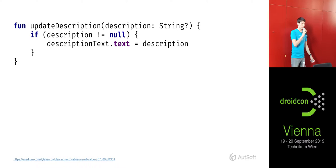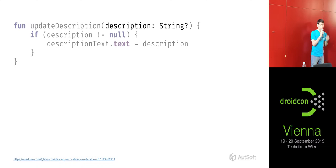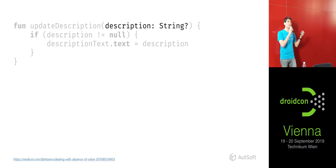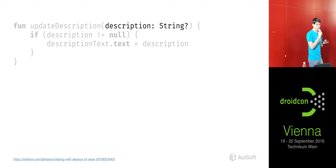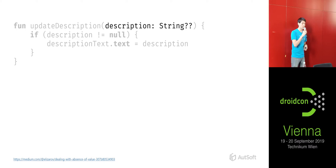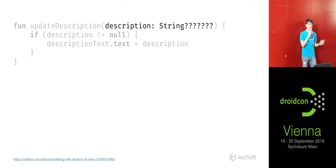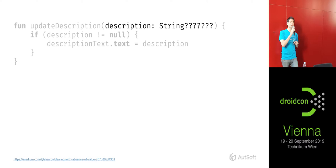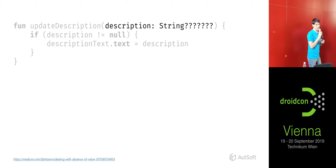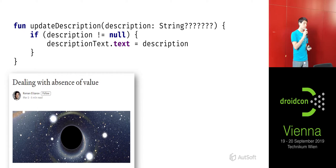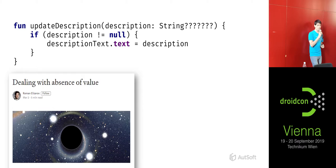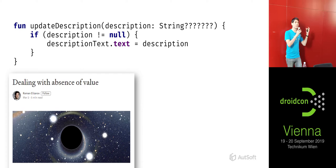Finally, a quick example in the spam section is about nullable values. We have a function using a nullable string as its parameter, null-checking it and using it as a non-null string inside the if-check. But did you know you can make these values even more nullable by putting more question marks? You can do any amount of question marks. This relates to how the language defines nullable types — I encourage you to check out the blog post linked on the slide. These extra question marks don't do anything, so this very-nullable string is just a regular nullable string.